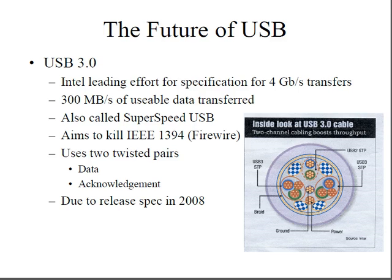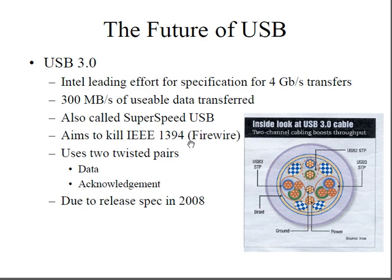The future of USB is USB 3.0, which has already been introduced. Led by Intel, it targets 4 Gbps transfers and 3 megabytes per second for usable data transfer. Also called SuperSpeed USB, it aims to replace IEEE 1394 FireWire. It uses two additional twisted pairs for data and was released in 2008.